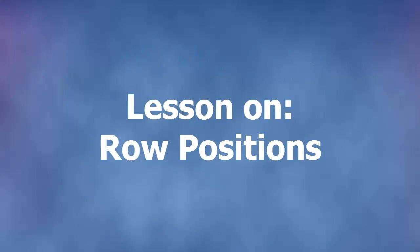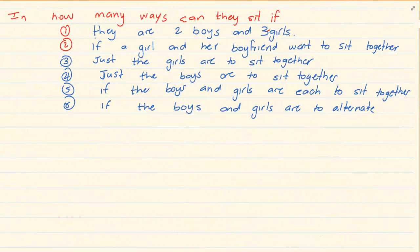Hi and welcome to my maths class. Today we are going to do row positions. When we are talking of row positions it means that you have a certain amount of people sitting together but they want to group up in a certain style, or you may have a few things you want to set in order like books, and they have to be put in a certain way. We want to decide how many alternatives there are.